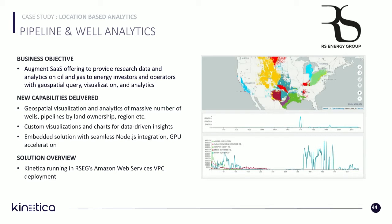There's a lot of geospatial analysis that comes into oil and gas — where the wells are located, the performance of those wells, and so on. RS Energy uses Kinetica's geospatial capabilities on top of Amazon AWS to get advanced server-side geospatial image building capabilities to power their main revenue-generating application, delivering insights directly to their end customers.